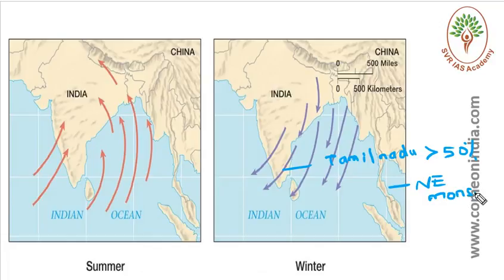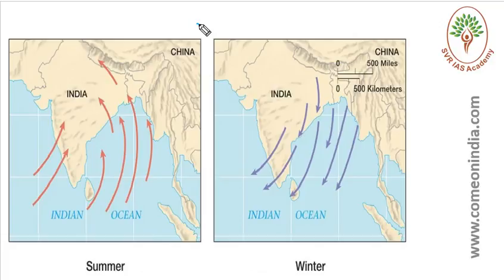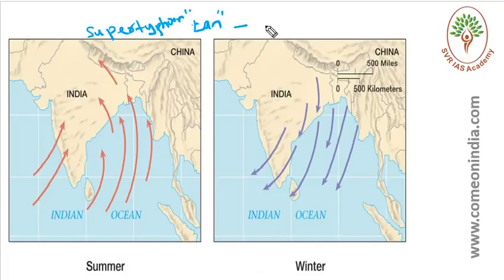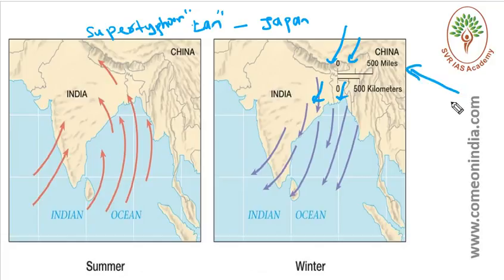In Japan, a super typhoon made landfall and weakened, removing the last hurdle in the formation of the Northeast monsoon. If the super typhoon had continued in the Japan area, it would have weakened the formation of the Northeast monsoon.